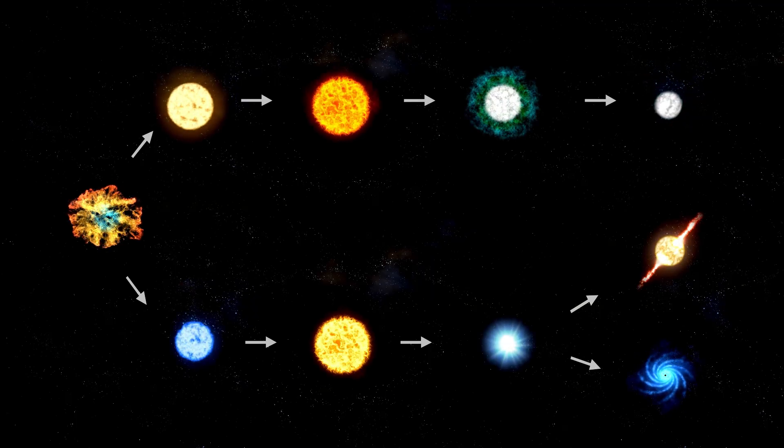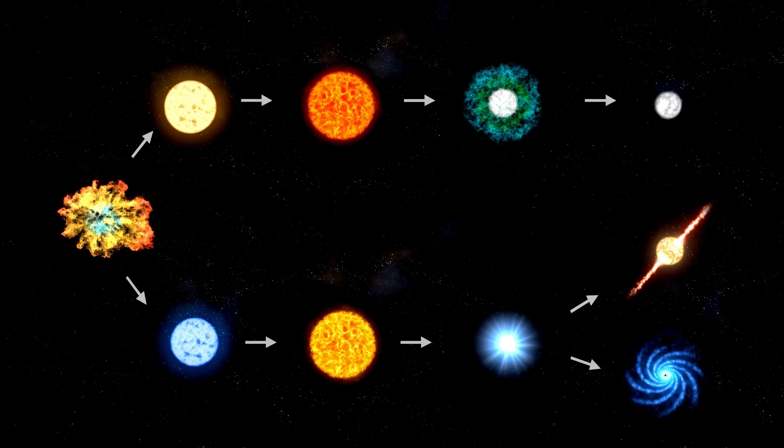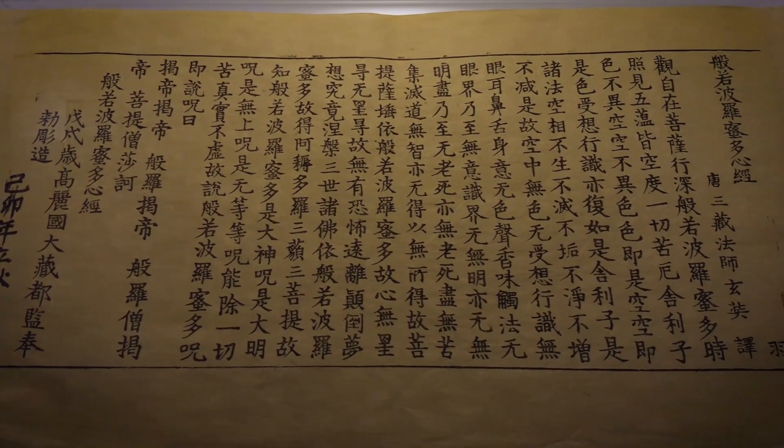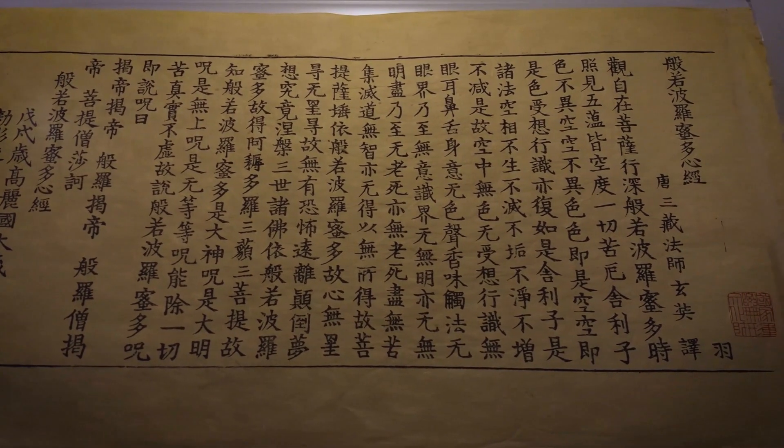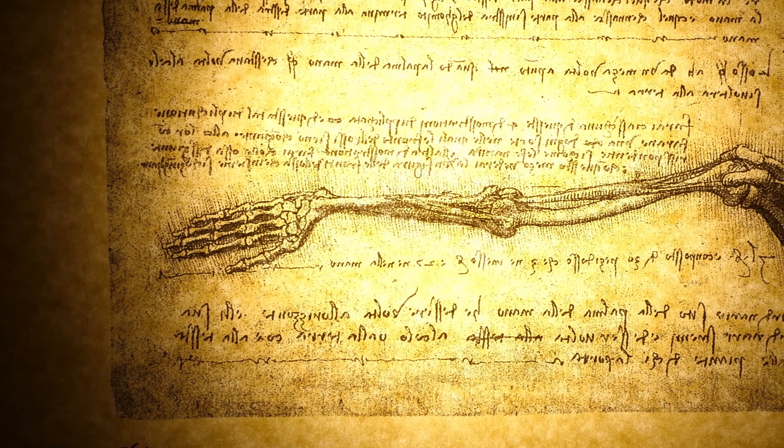Red supergiants are inherently unstable as they near the end of their lives, known for erratic cycles of dimming and brightening. Yet even by these volatile standards, Betelgeuse's most recent surge in brightness is wholly unprecedented, marking a major event in the field of stellar astrophysics.